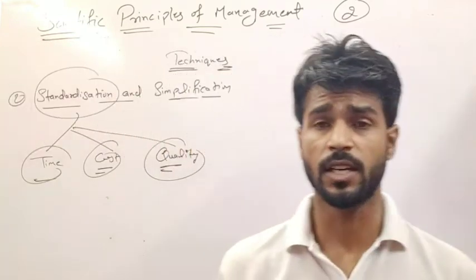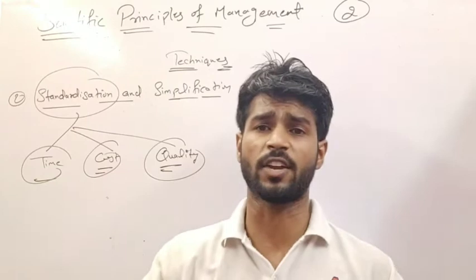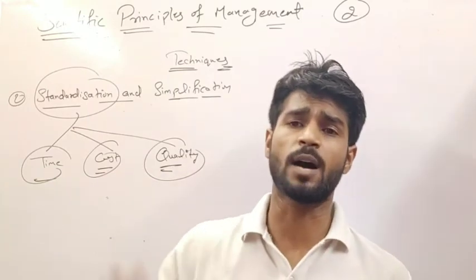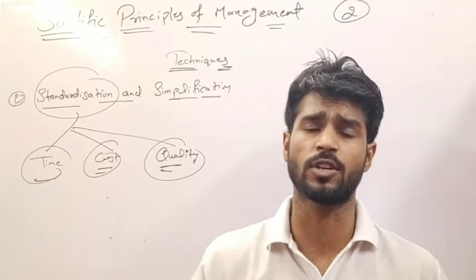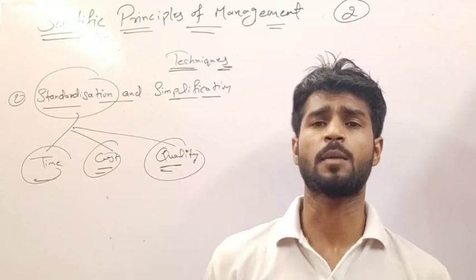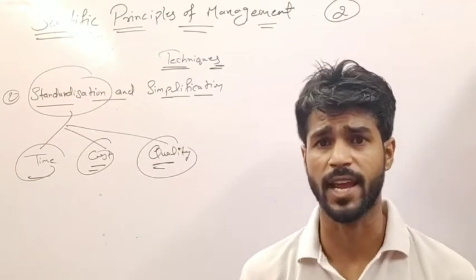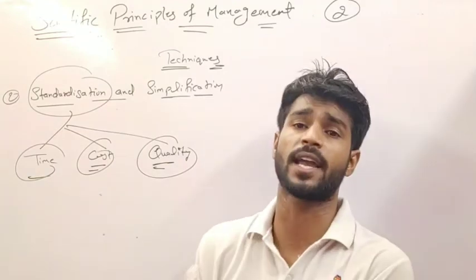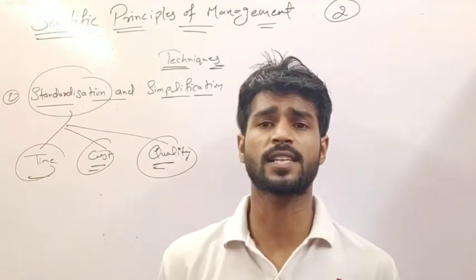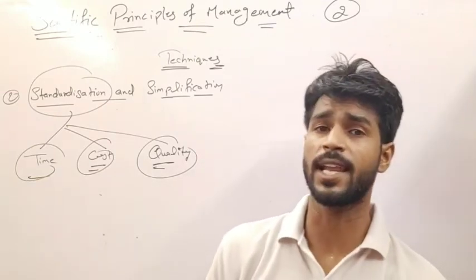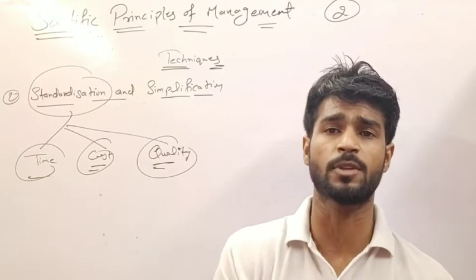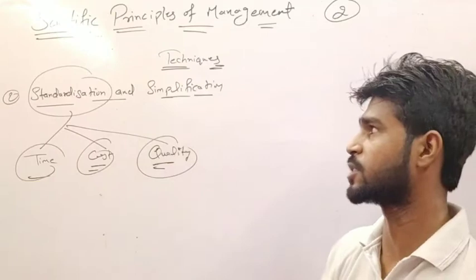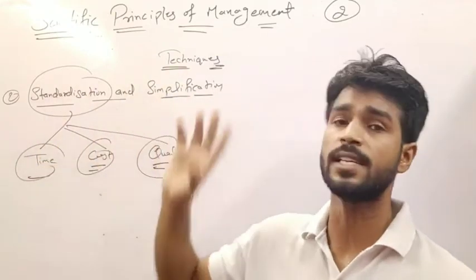Next is simplification. In simplification, unnecessary activities and problems that are not required are removed so that our organization is more efficient. For example, in a manufacturing factory making shoes, only the quality of shoes that are demanded in the market will be kept; the other shoes not demanded in the market will be eliminated. This is simplification. The second technique is standardization and simplification.